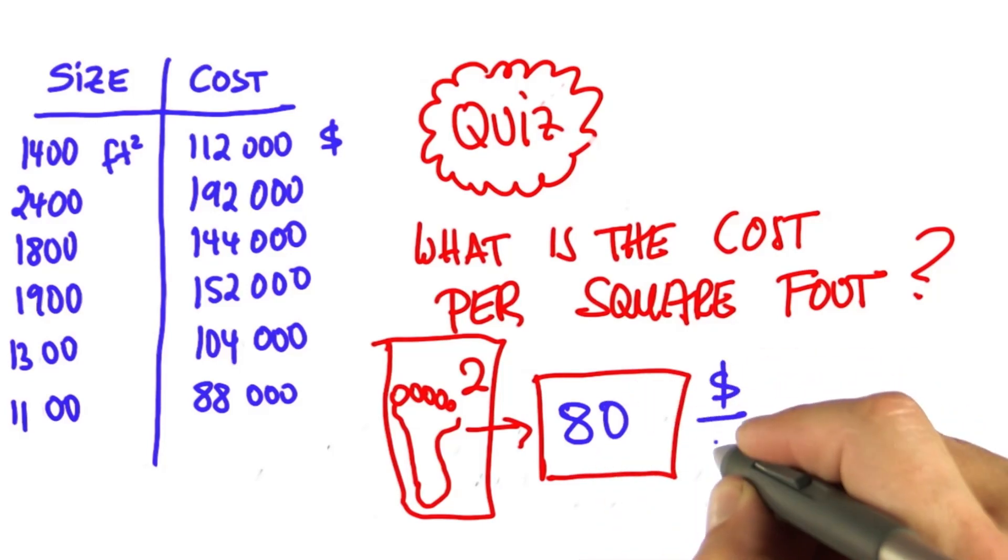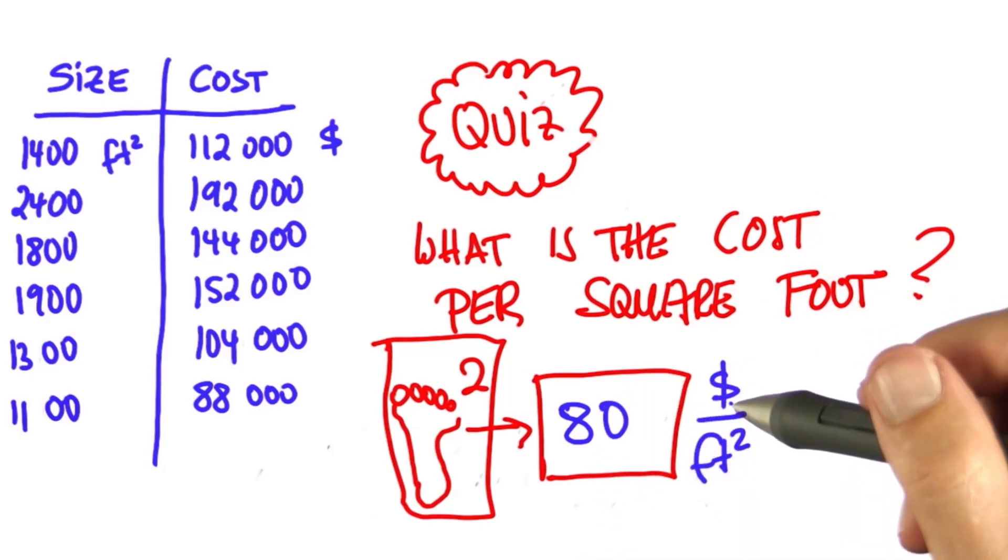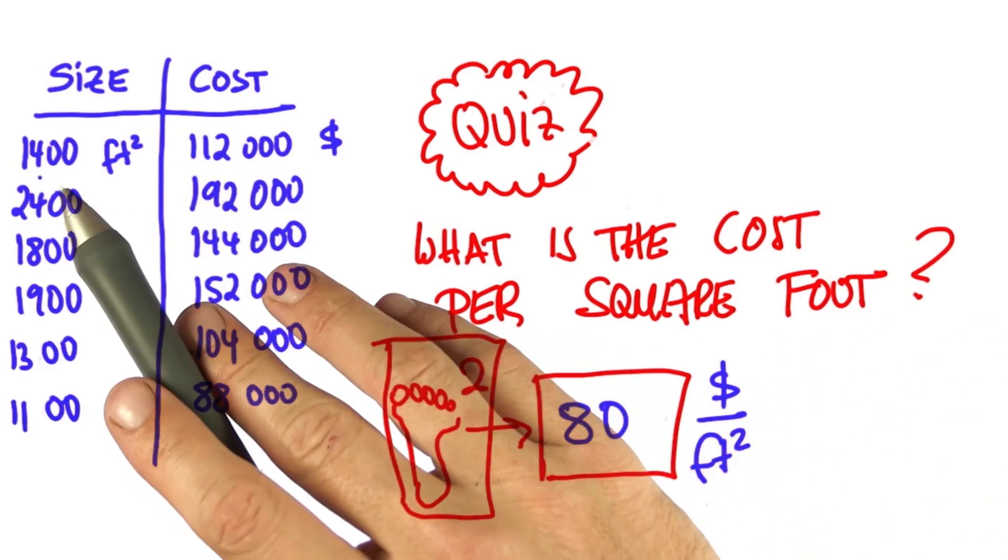And the answer is $80 per square foot. And you get this by just dividing $112,000 by 1,400.